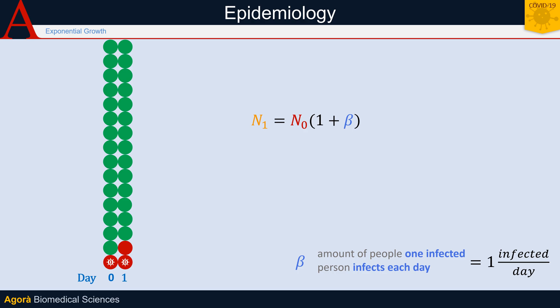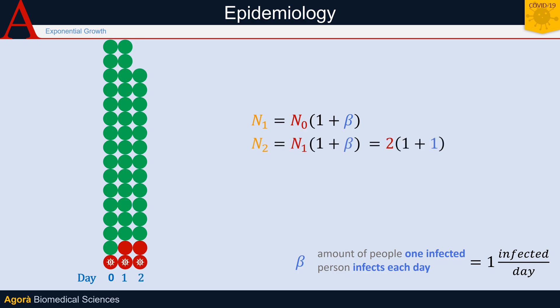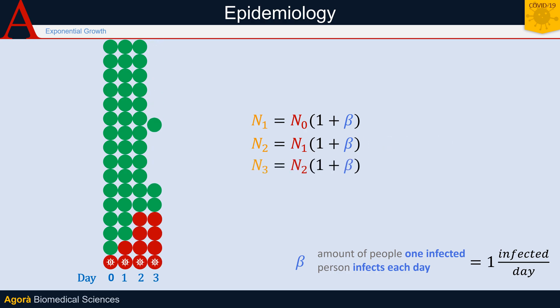We can predict the number of infected people on the second day: two infected people from the previous day, plus one new infected each, for a total of four infected people. The same reasoning applies to the third day: the four people who got infected the previous day, plus four new infections, for a total of eight.